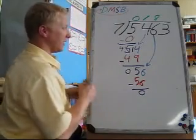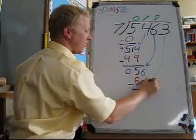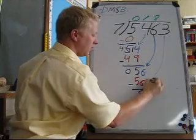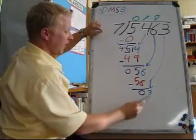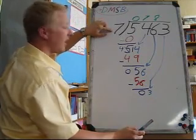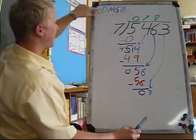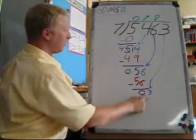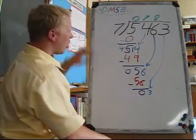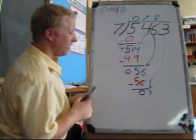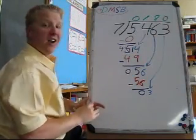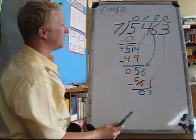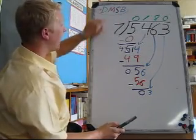B bring down. I bring down the 3. 3 divided by 7. Remember I have to go back to the beginning of DMSB. 3 divided by 7 and we always divide by 7 is 0. I cannot divide 3 into 7 groups. I need to continue through the acronym.